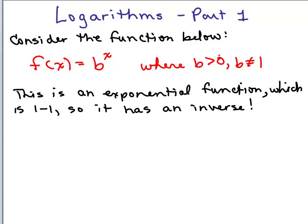We're going to consider this function: f of x equals b to the x, where b is greater than 0 and b is not equal to 1. Recall, this is an exponential function, and exponential functions are 1-to-1, so they have an inverse.